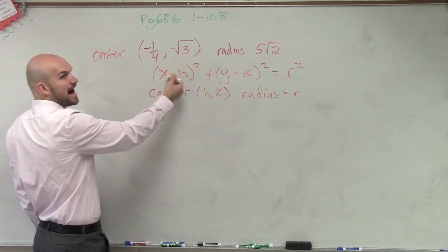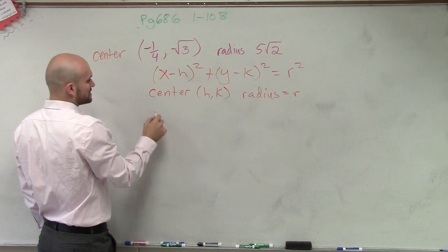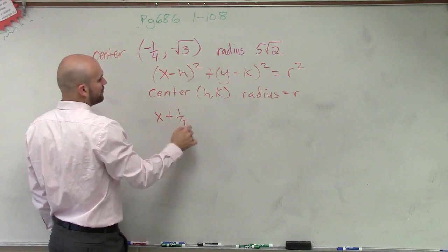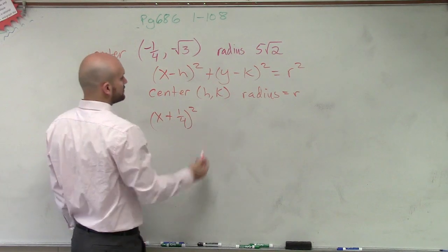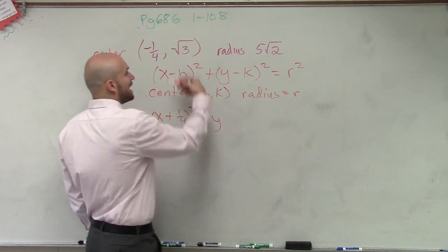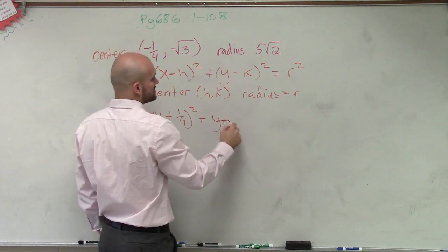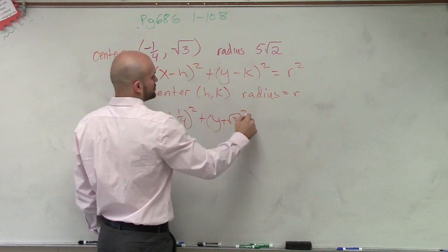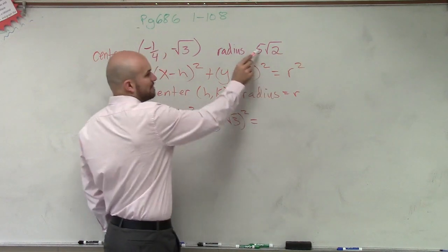So remember, it's x opposite of h. So therefore, it's going to be x plus one fourth squared plus y opposite of k. So it's going to be plus the square root of 3 squared equals my radius squared.